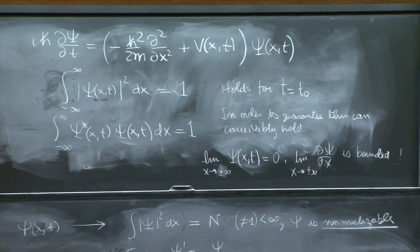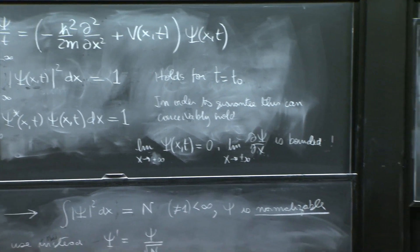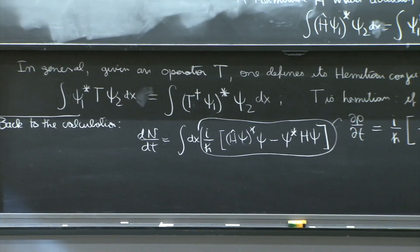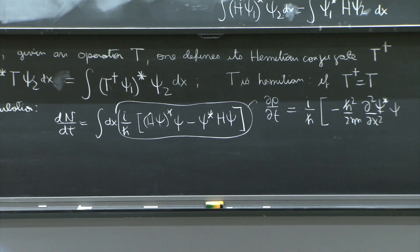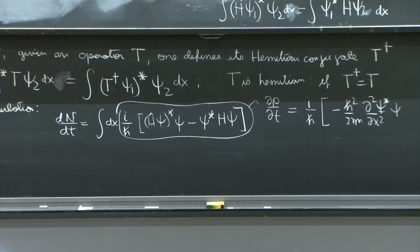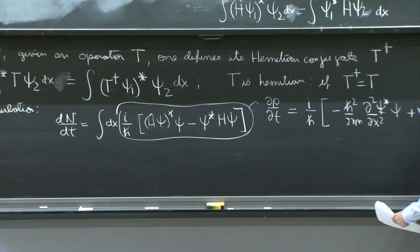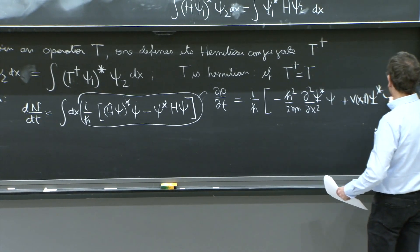So I'm beginning, H psi star, that's from the first term in the Hamiltonian, times psi, and then from the other term in the Hamiltonian is the potential. So it would be plus V of x and t psi star psi.